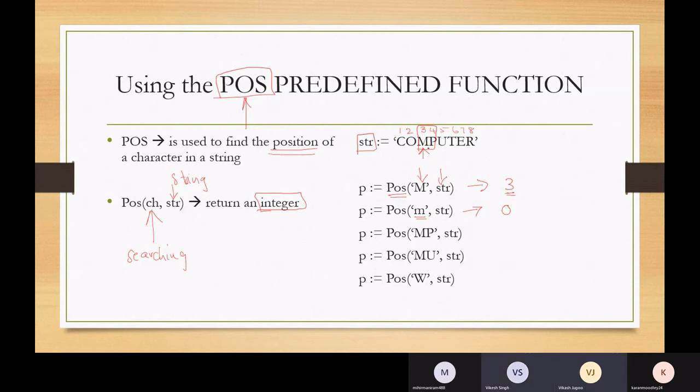M is at 3 and P is at 4. So that sequence, that sequence is found at position 3. That sequence of MP starts at position 3. So that's going to return a value of 3.